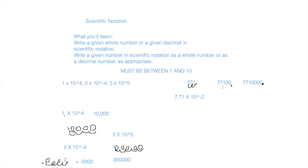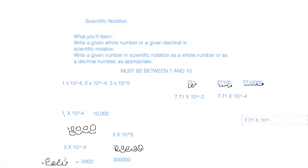For 7,710, we move the decimal place over until we have a number between 1 and 10. Moving it four times gives us 7.71, so the answer is 7.71 times 10 to the negative fourth power. For the last one, we move the decimal over six times to get 7.71, so the answer is 7.71 times 10 to the negative sixth power.